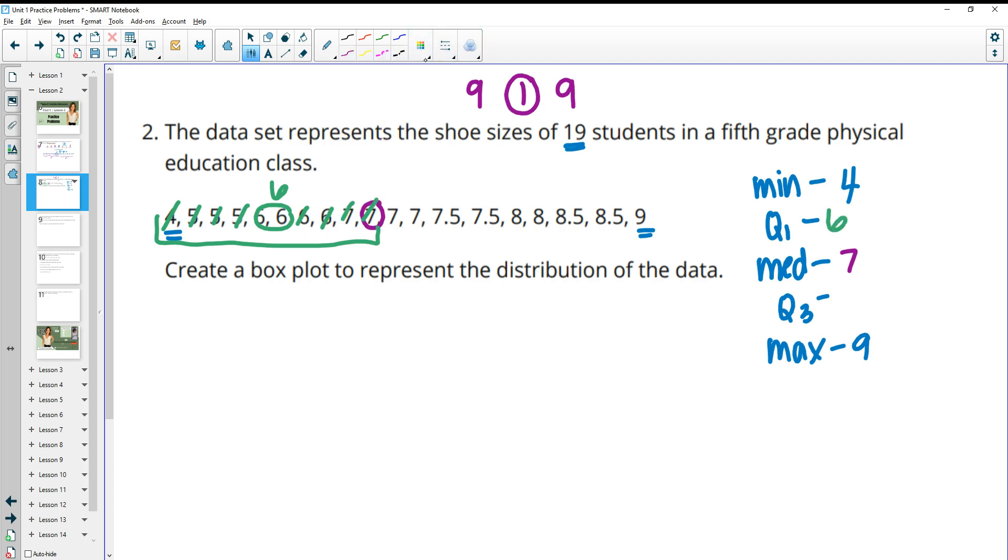And then you can do the same thing in the top half of the data, so going into the middle. And we find this to be the middle, and so we would find the average of this. So 7.5 plus 8 divided by 2, and we get 7.75 for that one.